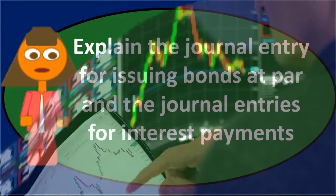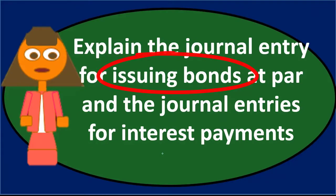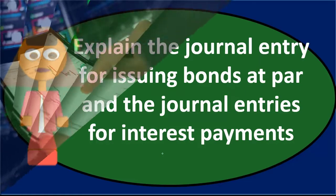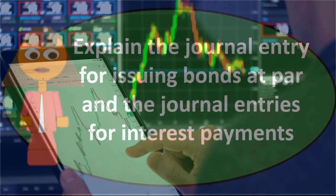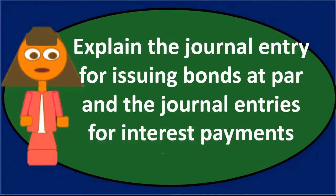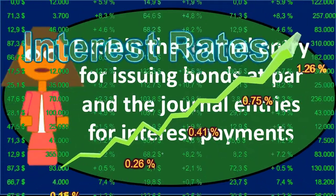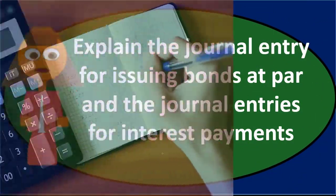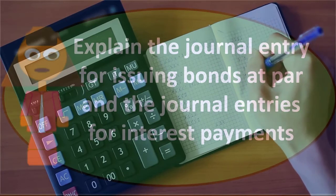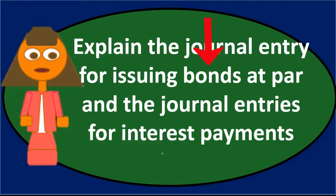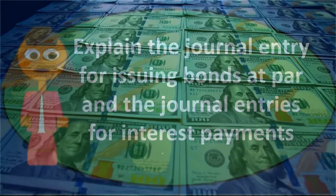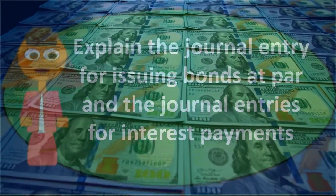However, if the bond was made at a date other than the issuing date, the market rate will probably differ from the stated rate, requiring a premium or discount. The journal entry to issue a bond at par is straightforward — just like a loan. For a $1,000 bond, we debit cash for $1,000 and credit bonds payable for $1,000, representing the amount we'll owe back at the end of the term. There is no premium or discount.